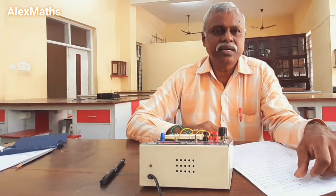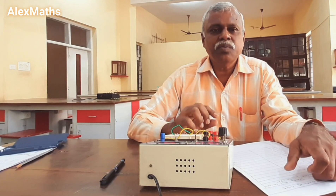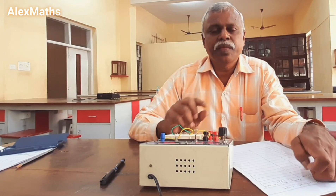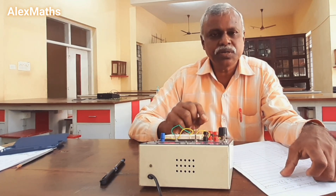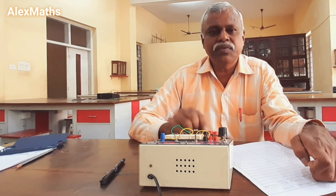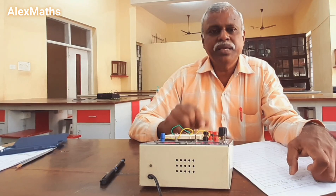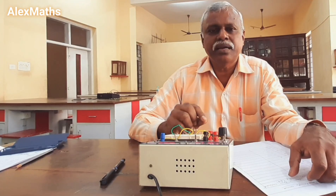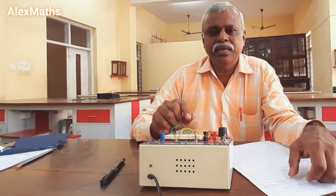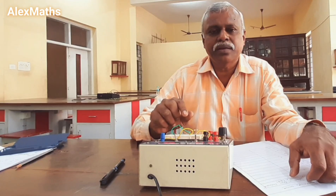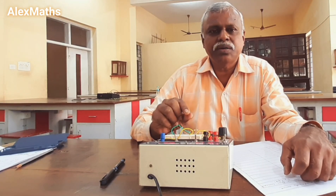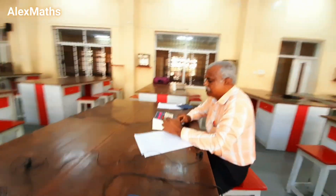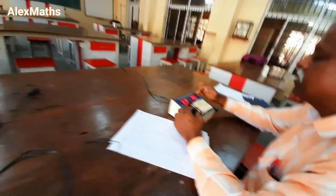Now you have to come to the reverse bias condition. For forward bias, the P side of the junction diode is connected to the positive terminal of the battery, but here in the reverse bias condition, the P side should be connected to the negative terminal of the battery. After that, you will start taking readings. Here you are getting the current in microampere, because you are getting a very minute current only. By rotating the knob, the voltage will vary.